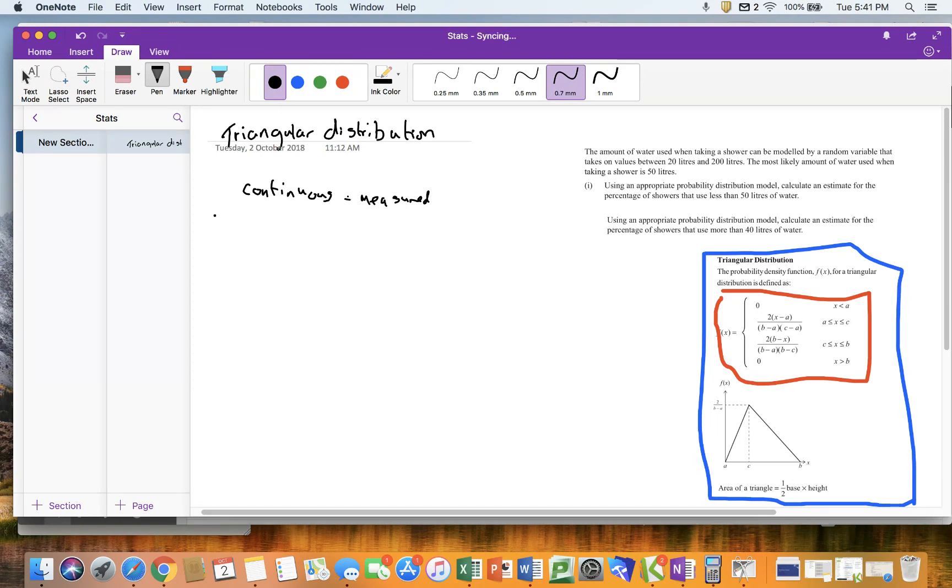But then for a triangular distribution, unlike a uniform distribution, a uniform distribution, they'll tell me that I've got a minimum and I've got a maximum. And they should tell you something along the lines of everything is equally likely. With a triangular distribution, they'll tell you a minimum, they'll tell you a maximum, and they'll tell you the most likely outcome, or they'll call it the mode.